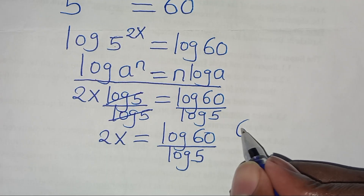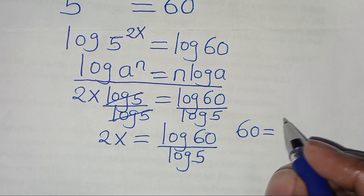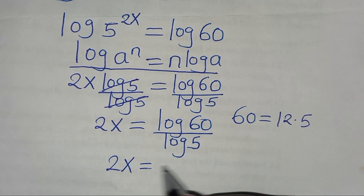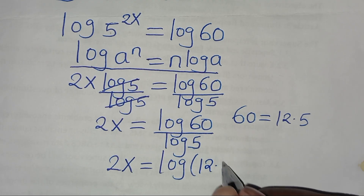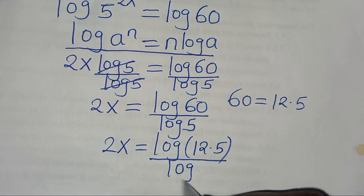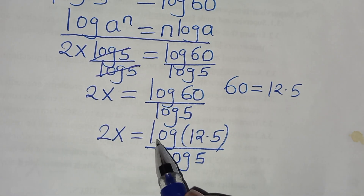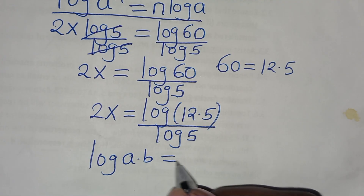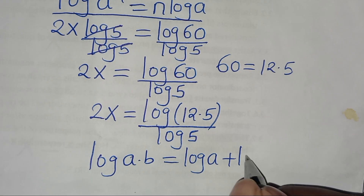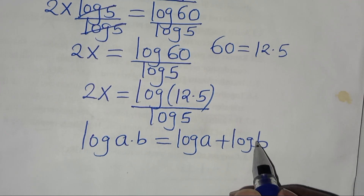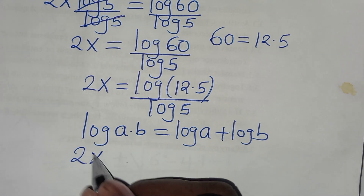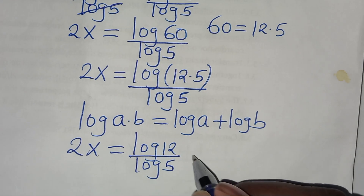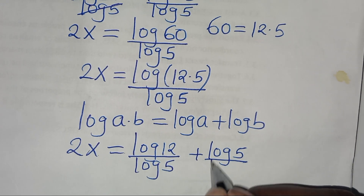This implies that we can express 60 basically as 12 times 5. Substituting this here, we have 2x is equal to log(12 times 5), everything divided by log 5. The next step is that log(12 times 5) is in the form of log(a times b), which can be expressed as log a plus log b. Applying this logarithm property, this implies that 2x is equal to log 12 divided by log 5, then plus log 5 divided by log 5.